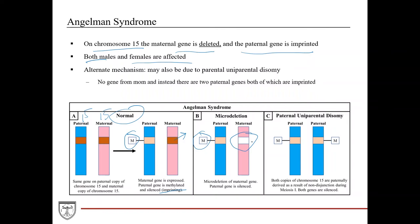Another example of where this can occur is when you inherit both copies of chromosome 15 from your dad — paternally derived — as a result of non-disjunction that occurs during meiosis 1.